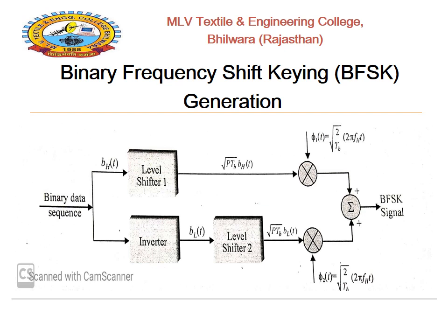Outputs of the level shifters are applied to product modulators. Another input to each product modulator is a frequency-shifted carrier signal. In the upper section of the figure, there are two parts: level shifter 1 and a product modulator (multiplier). The binary input data is applied to the level shifter, where the amplitude is under root P·TB. If BH of T is 1, the output is under root P·TB; if BH of T is 0, the output is 0. This output is then given to the multiplier.